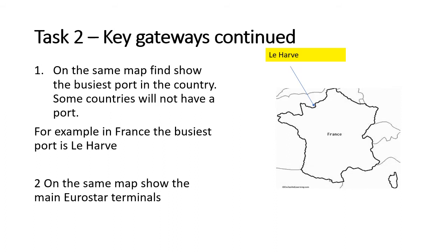On the same map, put the main Eurostar terminals — just do a search on Eurostar destinations and put those onto the map. You should then have a map with all the key gateways on it. If you're struggling for space, just have maybe a separate map for airports, one for ports, and then Eurostar terminals — but try and get all the key gateways on one map.